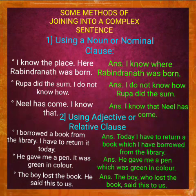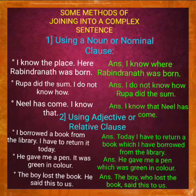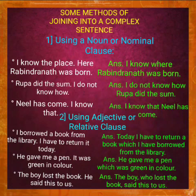Next example — 'Neel has come' and 'I know that.' If I join them into a complex sentence using a noun clause, the answer will be: 'I know that Neel has come.' Here, 'I know' is the independent clause and 'that Neel has come' is the subordinate clause — that is, a noun or nominal clause.